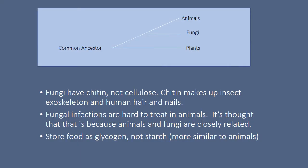At the cellular level, fungal cell walls are made up of chitin, not cellulose — though they do have cell walls. Chitin is what makes up insects' exoskeletons and your hair and nails. Because fungi are so closely related to animals, it's often difficult to treat fungal infections in animals, since treatments can also affect the host. Fungi also store their food as glycogen, not starch, making them more similar to animals than plants in that way.